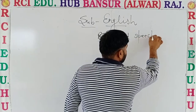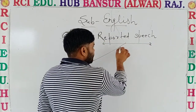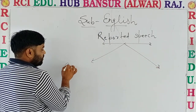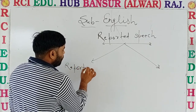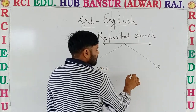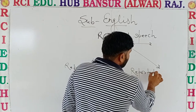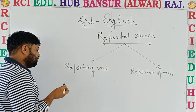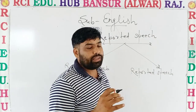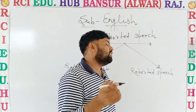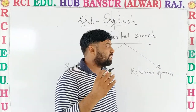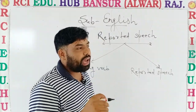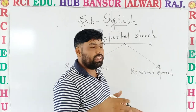Reported speech. One is reporting verb and second is reported speech. In your exam, most probably it comes in direct, or we have to change it into indirect. What is the difference? If a sentence is given in inverted commas, then it will be direct. Or we have to remove the commas and solve it in indirect.